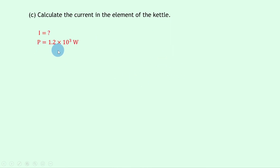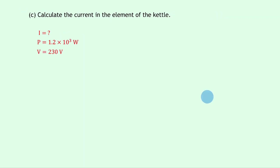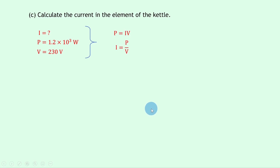Part c says calculate the current in the element of the kettle. We're finding current I, with power P = 1.2 × 10³ W and voltage V = 230 volts, since the question specified a mains kettle operating at 230 volts. Using P = IV and rearranging gives I = P ÷ V = 1.2 × 10³ ÷ 230, which gives 5.2 amps.